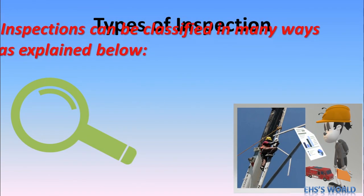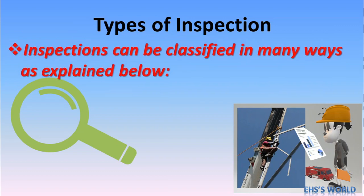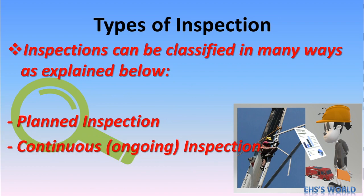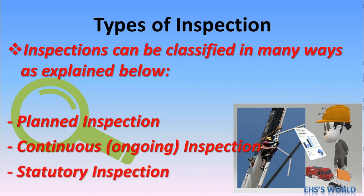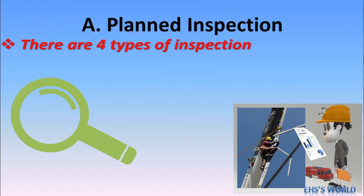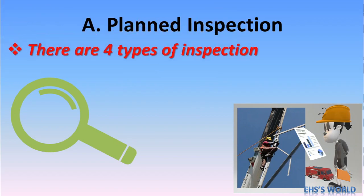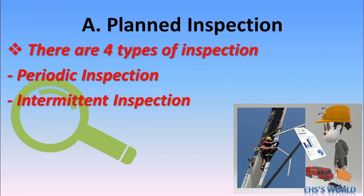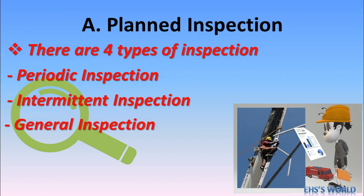Inspection can be classified in many ways. The three main types are: first, plant inspection; second, continuous inspection; and third, statutory inspection. Plant inspection itself has four sub-types: periodic inspection, intermittent inspection, general inspection, and special inspection.